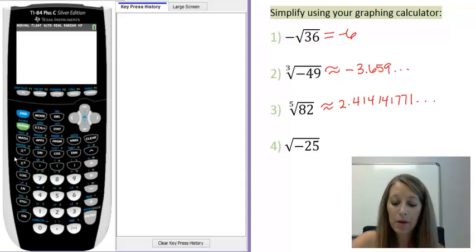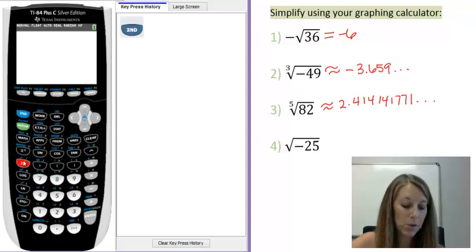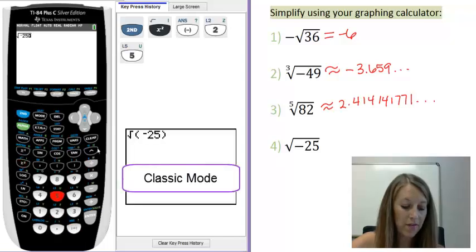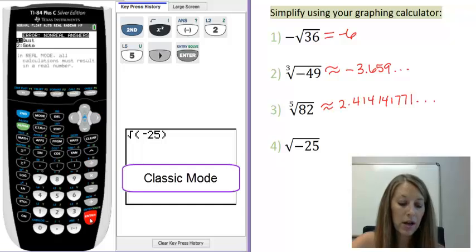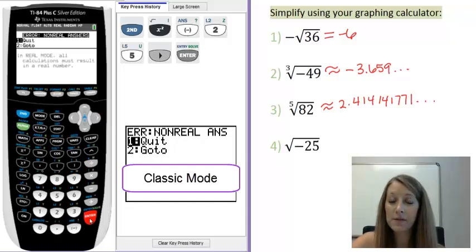Alright, my last example is the square root of negative 25, and you should know why I'm including this here. But if you don't, go ahead and just type it into the calculator. My square root is above the x squared button, so second square root. Type in negative, and then 25, over to finish my square root, and enter, and we can see that it gives us an error.